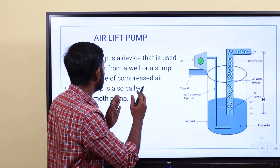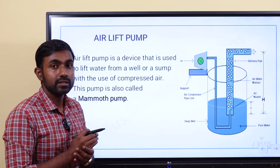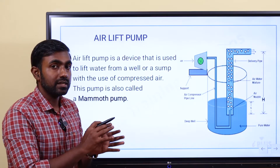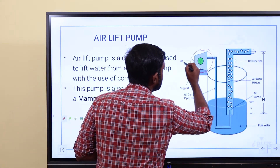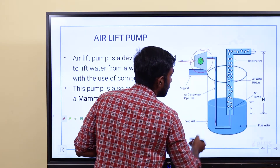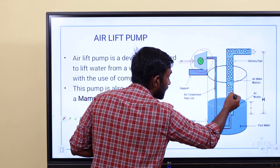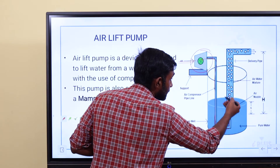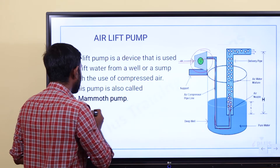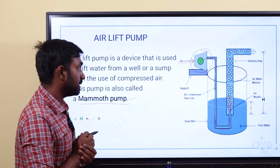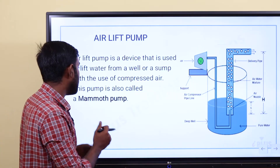The air lift pump is used to lift water from a well or a sump using compressed air. We put a compressor — the compressor pushes compressed air into the pump, creating an air and water mixture that lifts the water up. This pump is also called a mammoth pump.